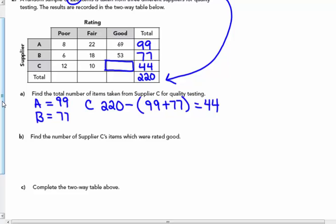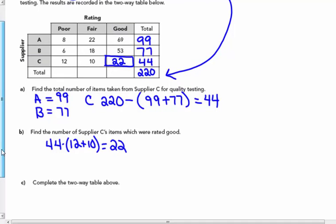Now find the number of supplier C's items which were rated good, that blue box. 44 take away the sum of 12 and 10, that's 22. So this would be 22 that were rated from supplier C as good.